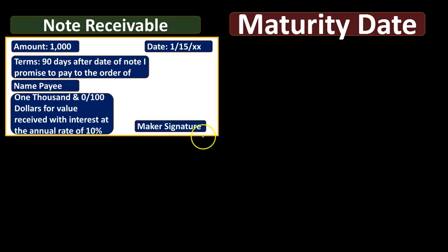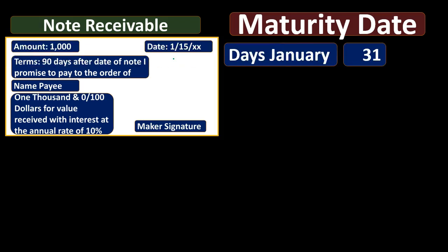We're going to figure out the maturity date. This can be a little more confusing than you would think because if it's a 90-day note starting on January 15th, each month has a different number of days, so it's actually a bit tricky to figure out the actual date of maturity. A computer can help when generating notes, but when you're working problems you want to have a system for this — it may be a little more confusing than you'd expect at first.